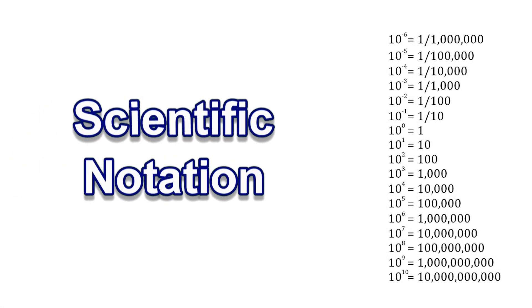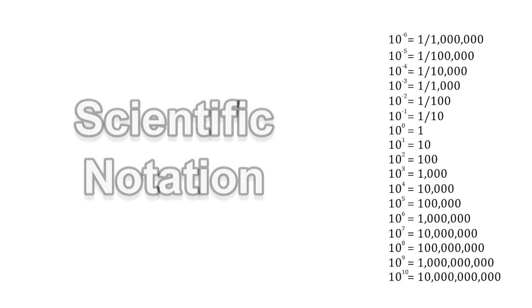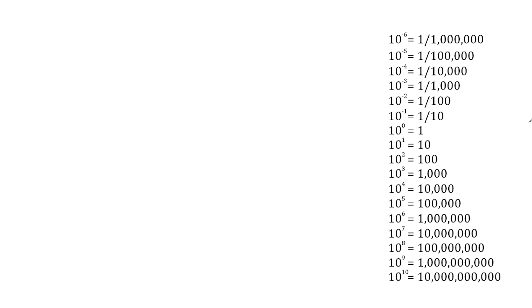In this tutorial, what we're going to do is take numbers that are written in standard form and express them in scientific notation. To help us write numbers in scientific notation, we have here on the side different powers of 10. A power of 10 is simply the result of multiplying 10 by itself.